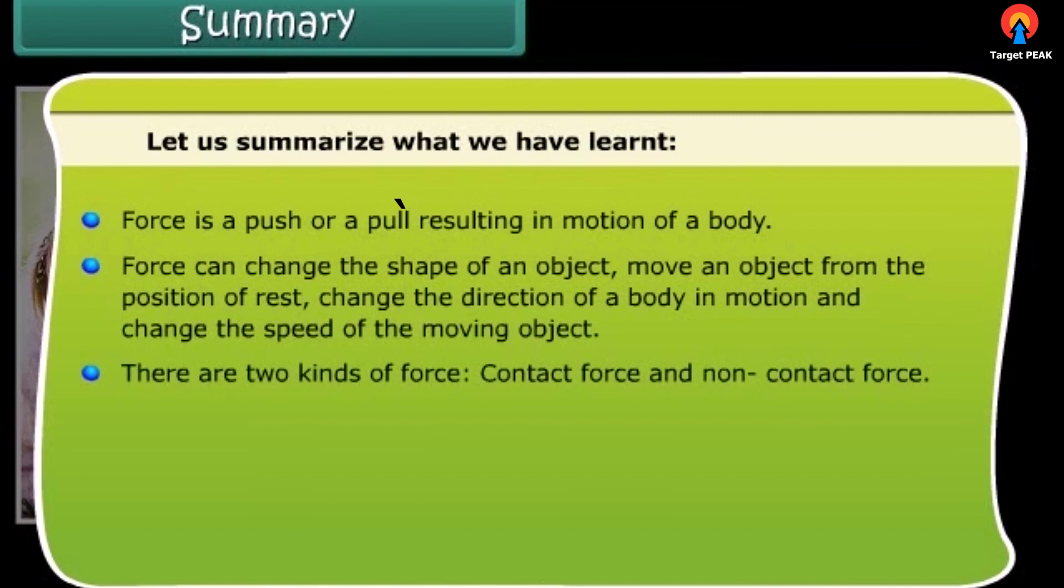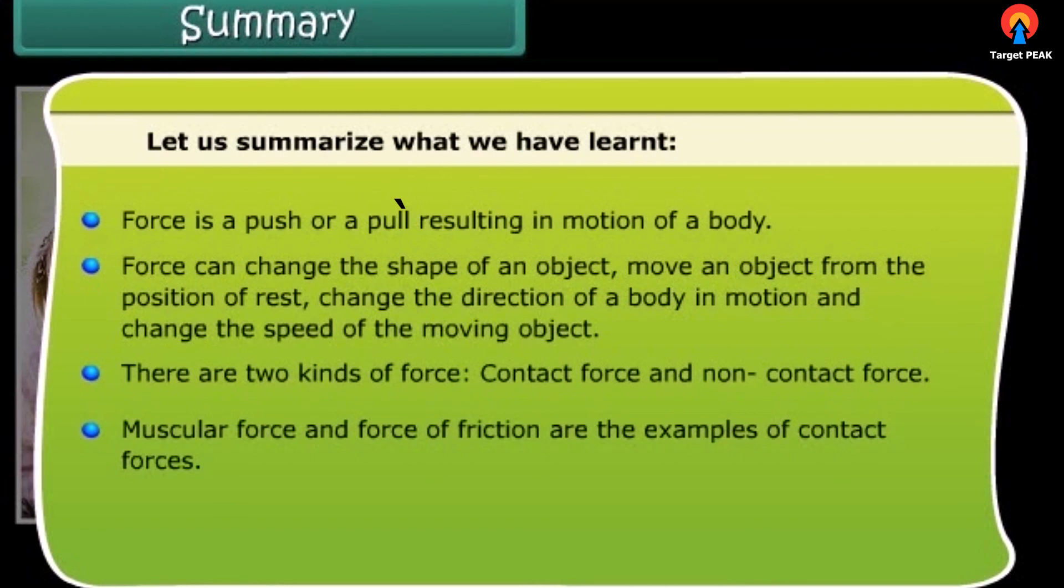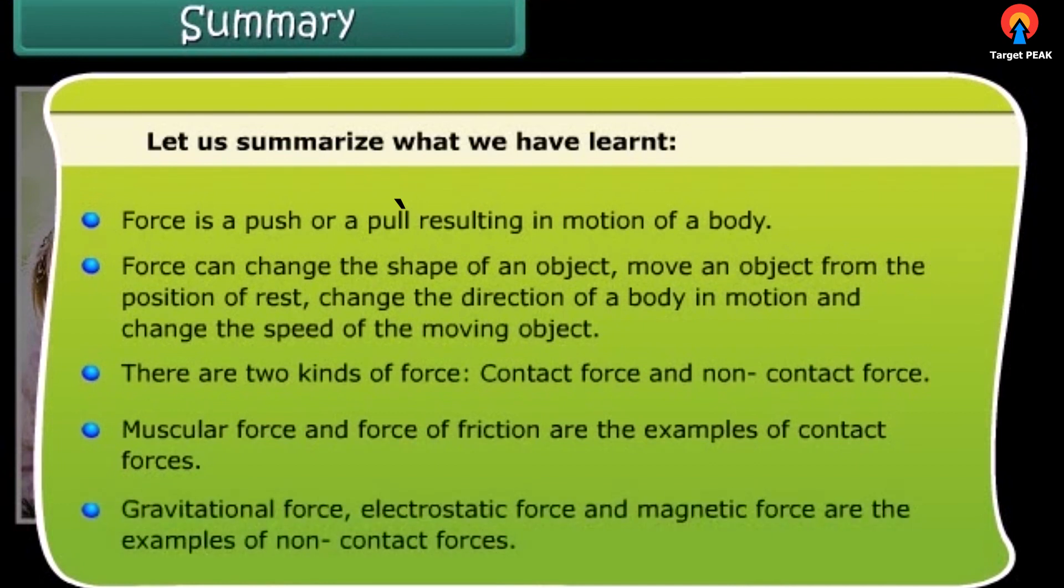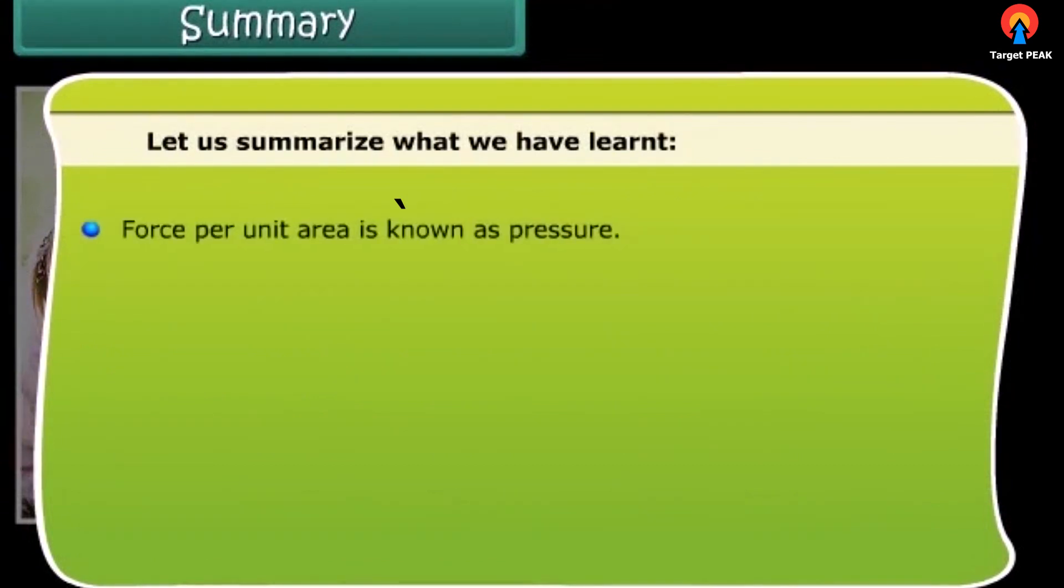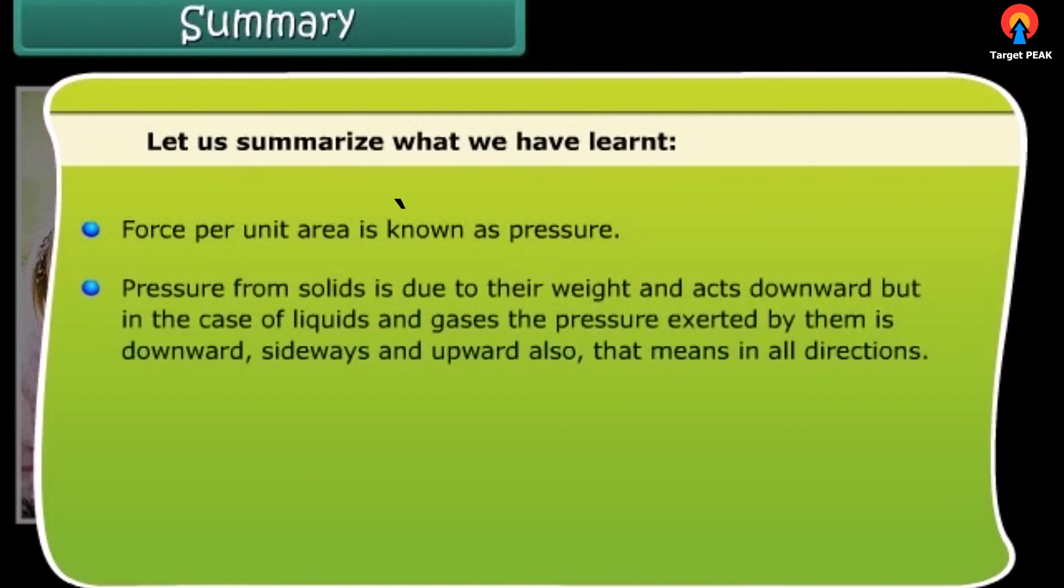There are two kinds of force: contact force and non-contact force. Muscular force and force of friction are examples of contact forces. Gravitational force, electrostatic force, and magnetic force are examples of non-contact forces. Force per unit area is known as pressure. Pressure from solids is due to their weight and acts downward, but in the case of liquids and gases, the pressure exerted by them is downward, sideways, and upward also - that means in all directions.